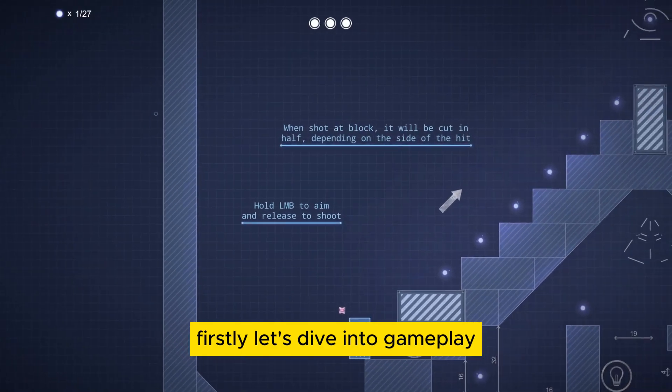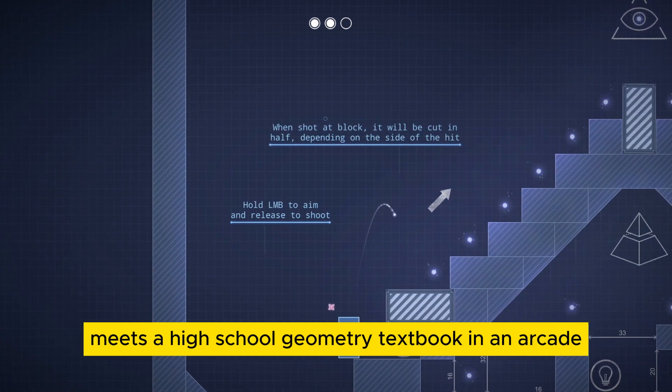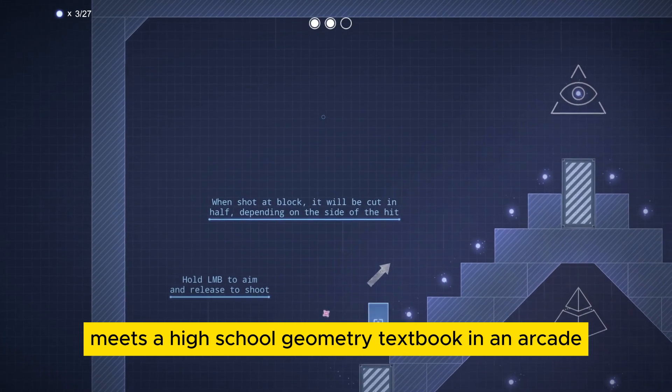Firstly, let's dive into gameplay. Haver is what you get when Thomas Was Alone meets a high school geometry textbook in an arcade.